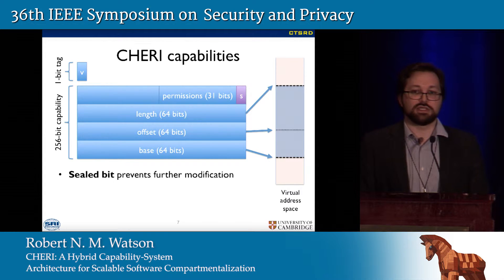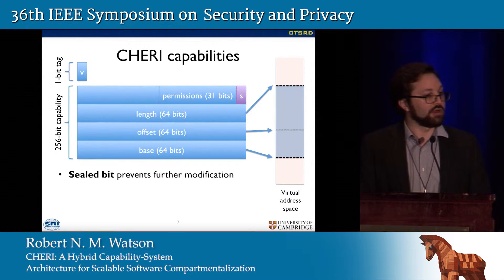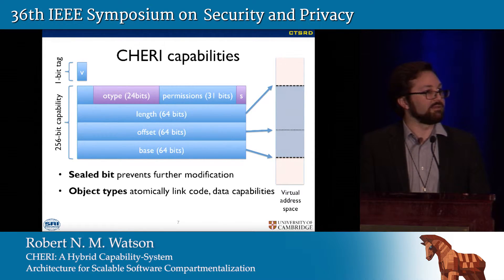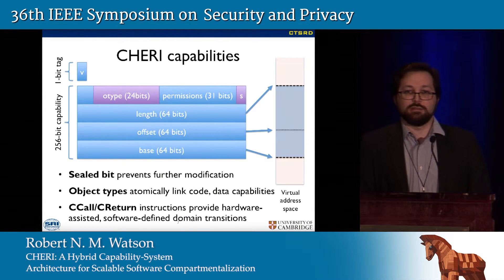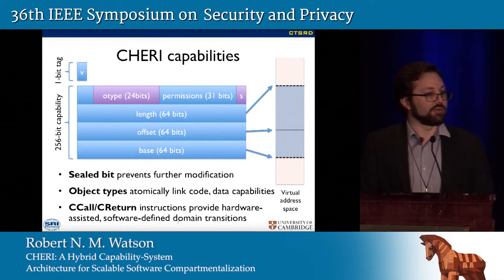We're going to add a sealed bit. It takes our monotonicity properties and gives us the ability to say this entire capability can no longer be modified, allowing us to implement encapsulation — you have a reference to an object, you're no longer allowed to manipulate the reference, it has been sealed. We're also going to add a new object type, allowing us to take code capabilities and data capabilities and atomically bundle them together so that an invocation mechanism can specify the two in tandem. Finally, we have a hardware-optimized call and return instruction set that performs checks in hardware but throws an exception to software to allow software-defined portions of the domain transition mechanism — all within a virtual address space.